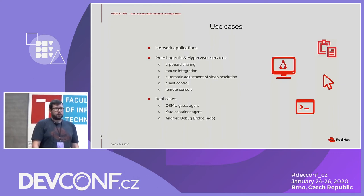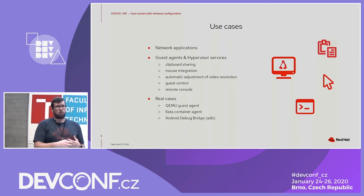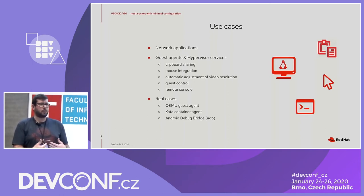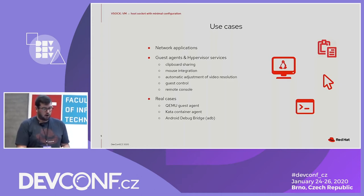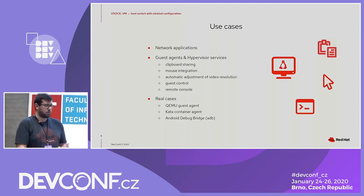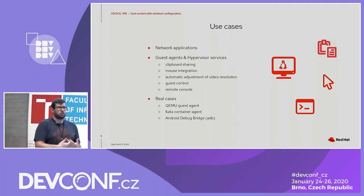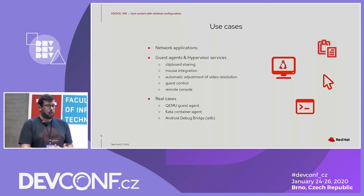Some use cases of VSOCK: network applications can be easily adapted, but VSOCK is very useful for guest agents or when the hypervisor wants to provide services to the guest. Real cases that use VSOCK include the QEMU guest agent or the Kata container agent — used to start and control containers in a VM. Another example is the Android Debug Bridge: you can use VSOCK when you have an Android device emulated in a VM and want to use ADB without configuring network cards or serial ports.